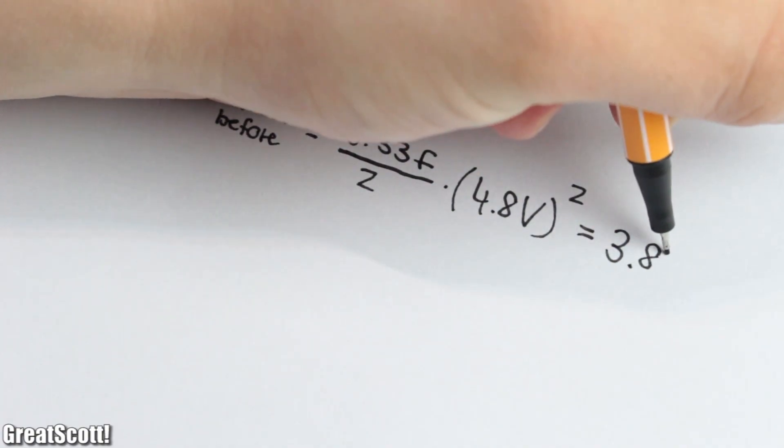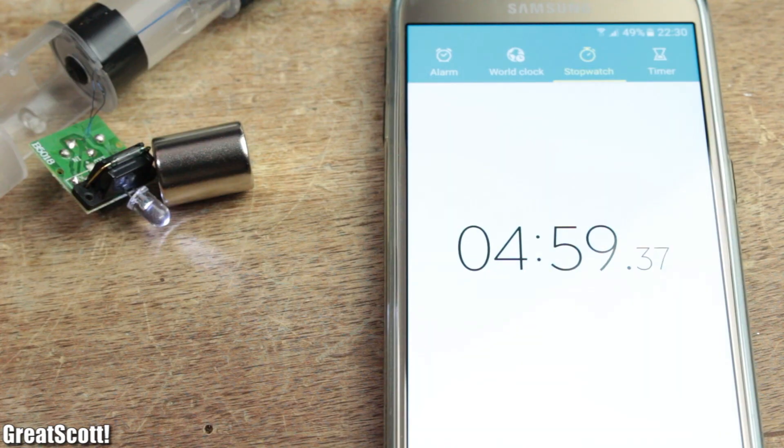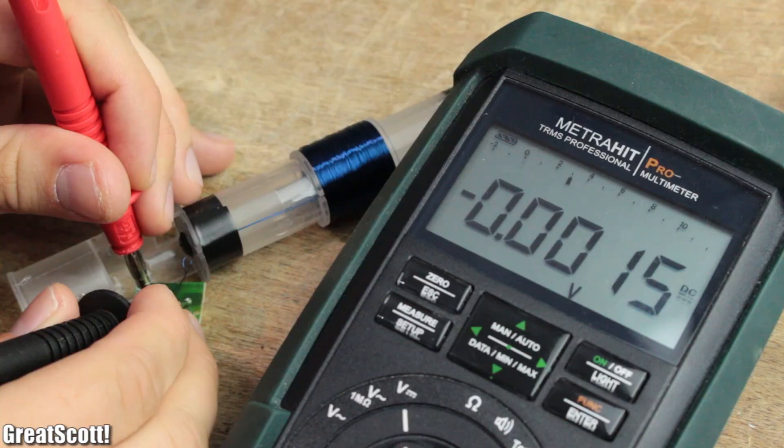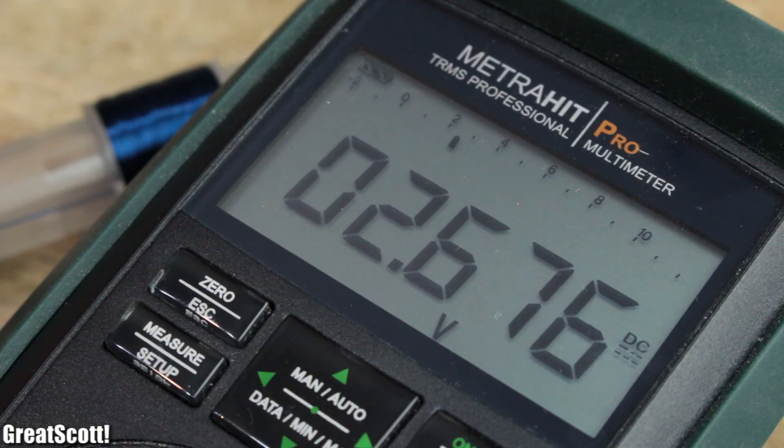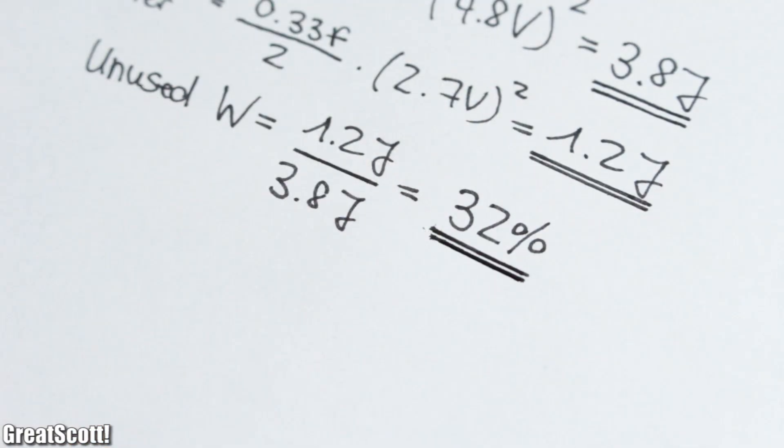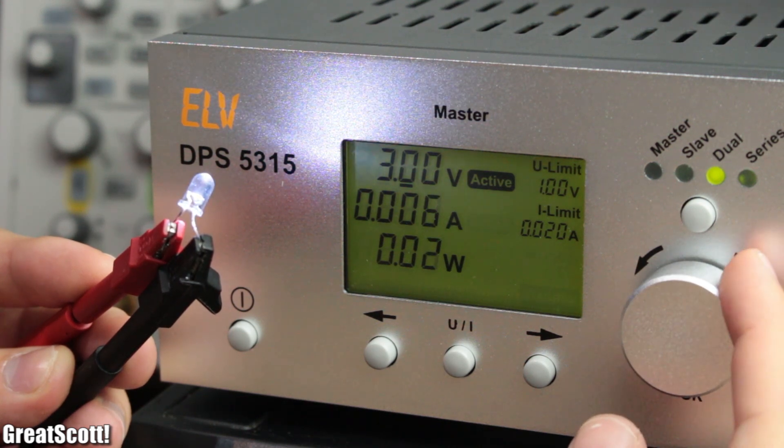But even after the LED got dark, the supercap is still charged to 2.7 volts, which basically means that 32% of the initial energy is unusable for us due to the high forward voltage of the LED.